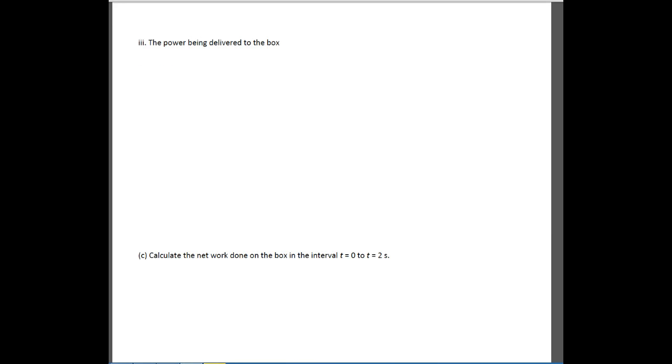The next part wants us to find the power being delivered to the box. Power, there's a couple different ways to do this one. You can do one way or the other. It doesn't matter. We're just going to do it one way because I think this is the easier way to do it. Power is work over time. But it's also the force times velocity. So this is going to be the easier way to do it. This is equal to the force. We just said the force is 300t. And then the velocity, if you remember, for the function t is 1.5t squared plus 2.